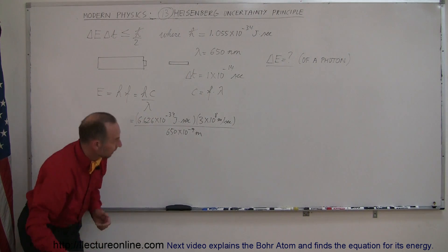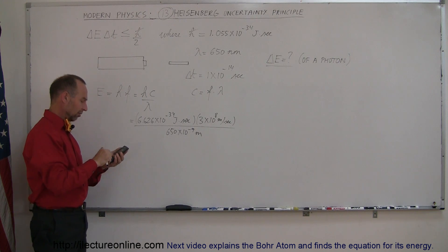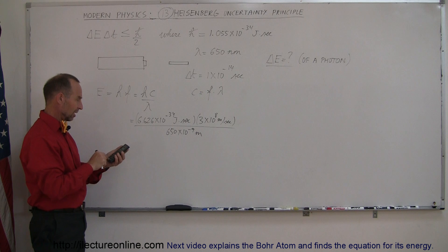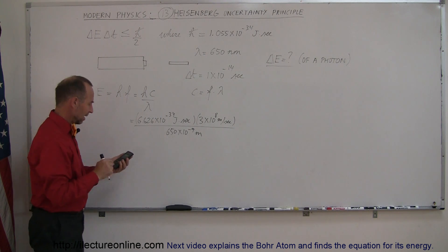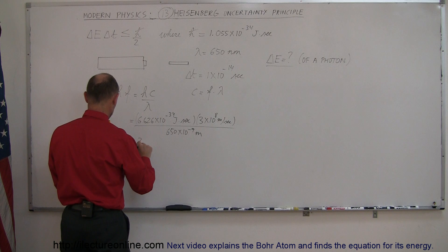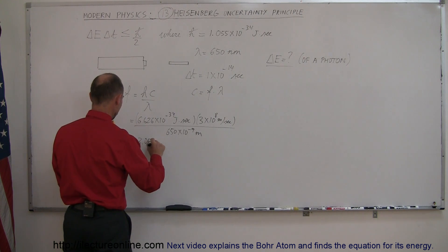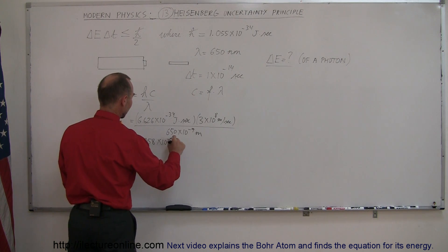And as before, we should get this as the energy of that photon: 6.626×10⁻³⁴ times 3×10⁸ divided by 650×10⁻⁹, and so that would be an energy of 3.058×10⁻¹⁹ joules.